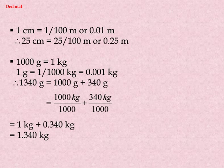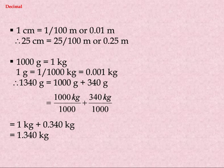1 centimeter equals 1/100 meter, or 0.01 m. Therefore, 25 centimeters equals 25/100, or 0.25 meters.